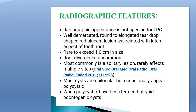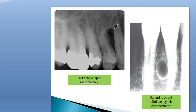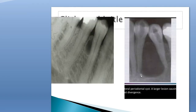Radiographically, the well-demarcated round to elongated teardrop appearance is the most common radiographic feature, and rarely does the lesion exceed one centimeter in size. In this picture we can see the teardrop appearance of a lateral periodontal cyst. In another picture, the cyst is present between the canine and premolar region where a well-corticated sclerotic margin is seen — this sclerotic margin indicates the lesion is slow-growing. Sometimes the lesion is larger and in these cases it causes root divergence.